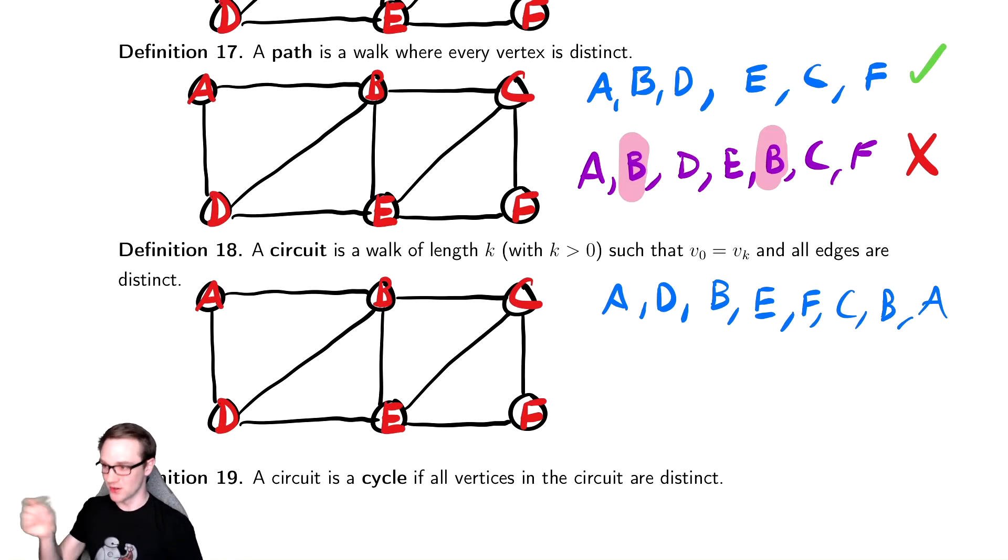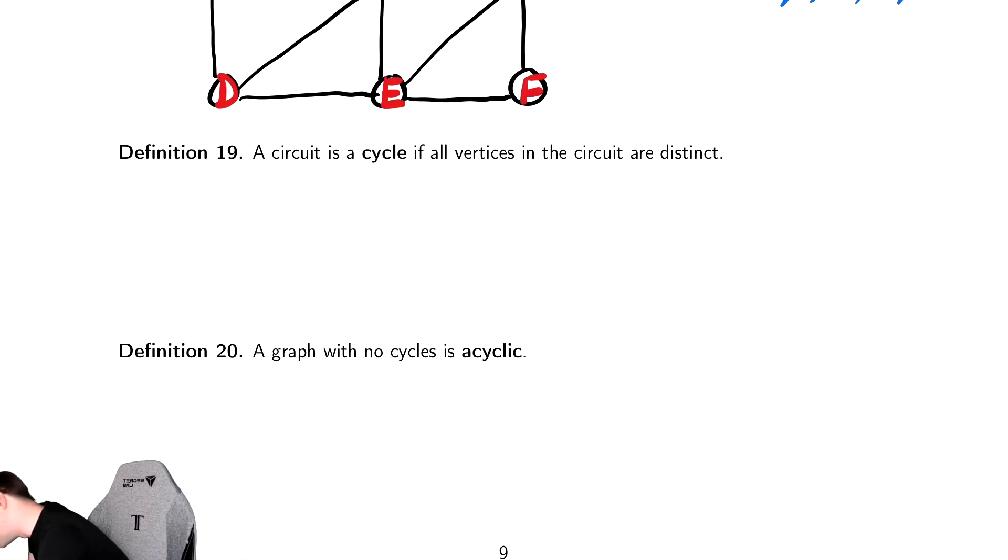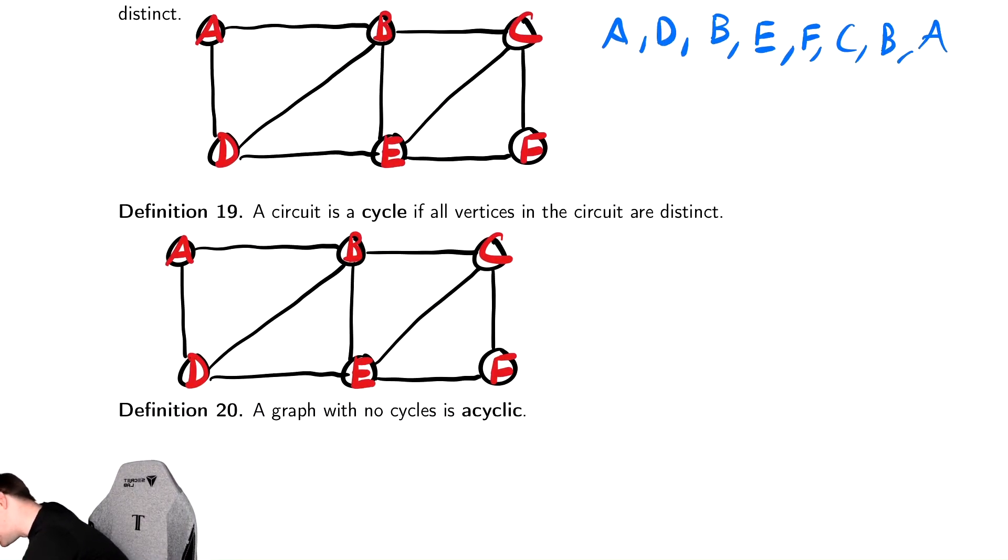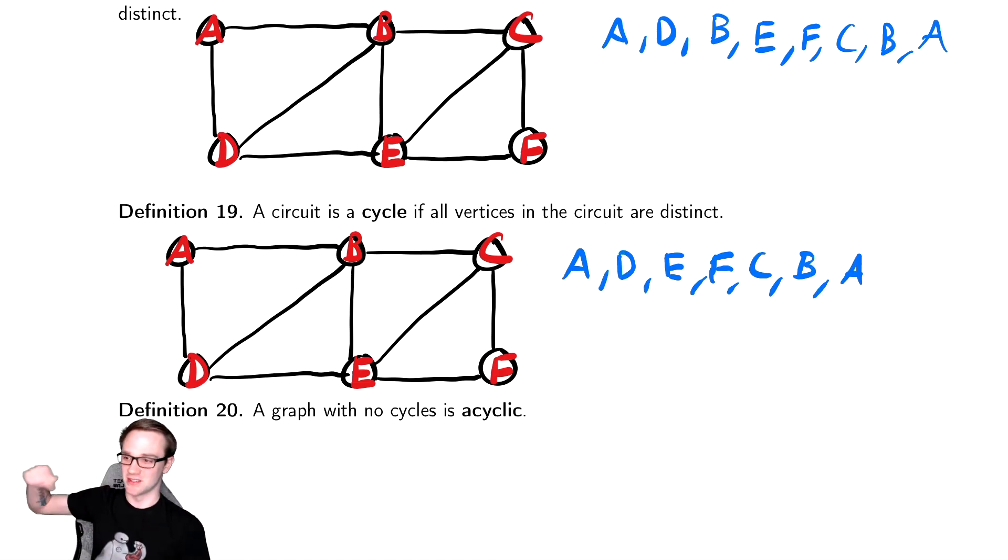A cycle is the same, but the vertices need to be distinct, except for the endpoints. So let's do our final example, which is a cycle. We're going to do A, D, E, F, C, B, A. So this is valid even though it reuses the vertices at the end. When we say the vertices are distinct, it means all but the endpoint vertices of it are distinct. So that is a cycle.